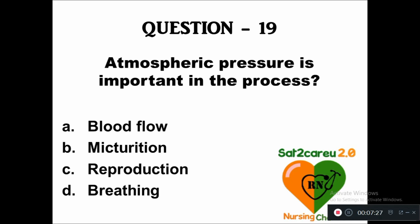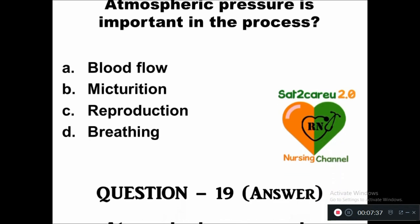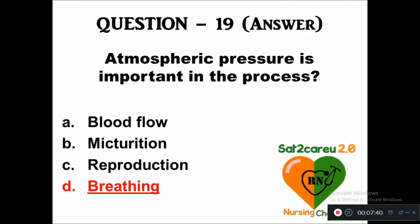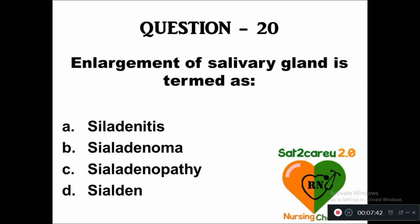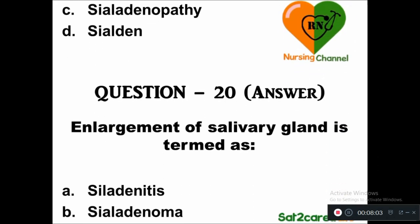Question 19: Atmospheric pressure is important in the process of — option A: blood flow, B: maturation, C: reproduction, D: breathing. Atmospheric pressure is important in the process of breathing. Question 20: Enlargement of the salivary gland is termed as — option A: sialoadenitis, B: sialoadenoma, C: sialoadenopathy, D: sialoadenum. The answer is option C, sialoadenopathy.